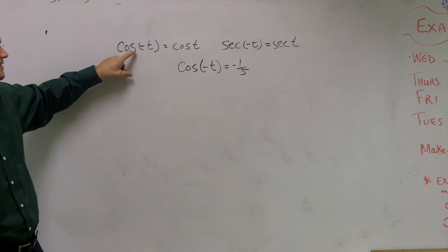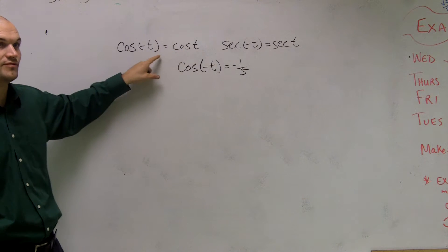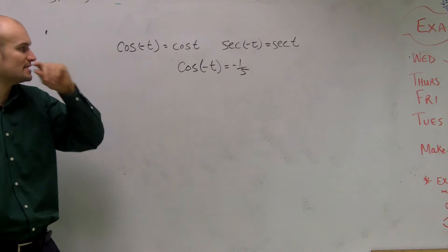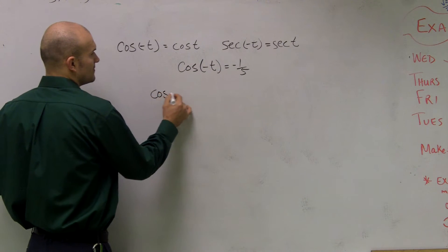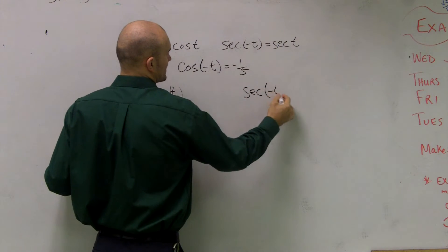So what happens when an even function, if you take the negative of your value, you're still going to get back your original equation. So if you take the negative of t, it's the same thing as taking the cosine of t. So I believe they asked us to find cosine of t and secant of negative t.